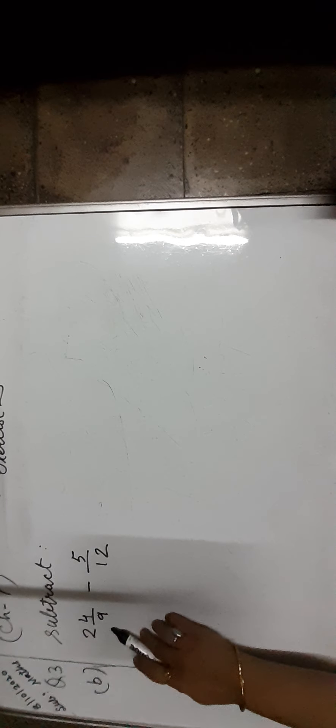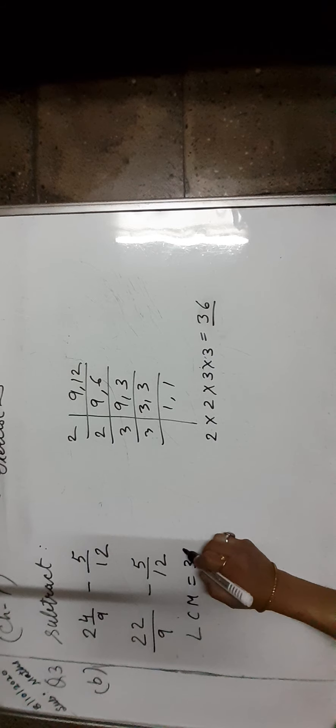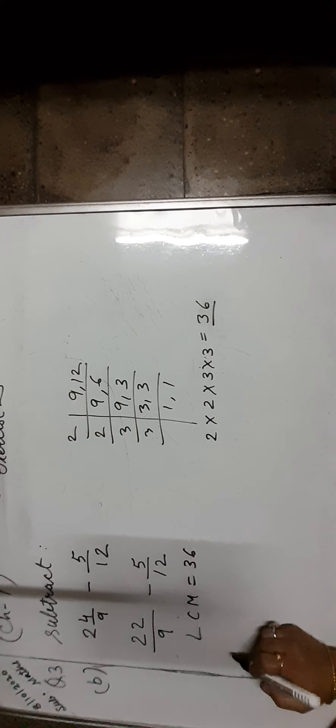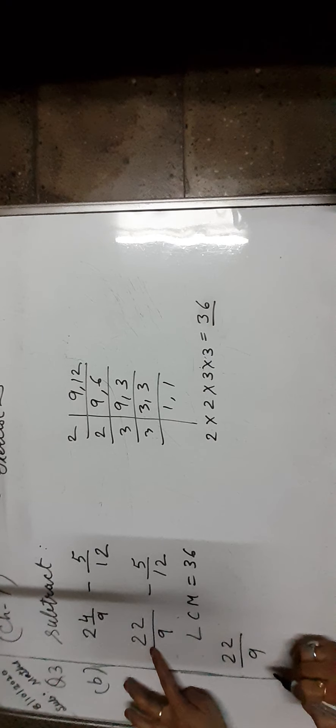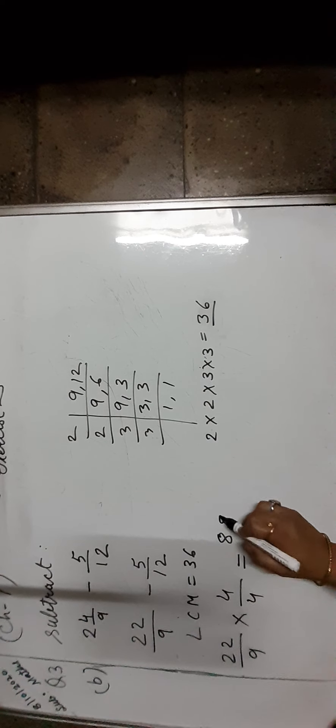Question number B is 2 and 4 upon 9 minus 5 upon 12. First we convert the mixed fraction into an improper fraction. It should be written as 22 upon 9 minus 5 upon 12. The given fractions are unlike. To make them like, first find the LCM of the denominator. The LCM of 9 and 12 is 36. Take the first fraction that is 22 upon 9 — multiply by 4 to get denominator 36, giving 88 upon 36.